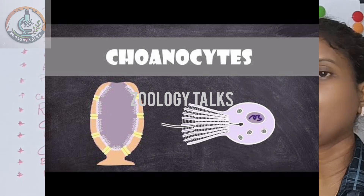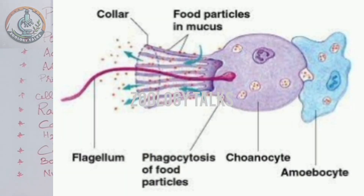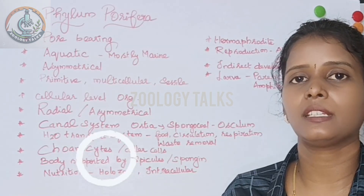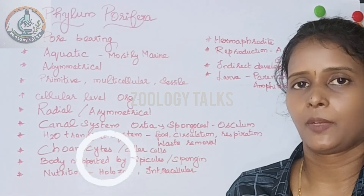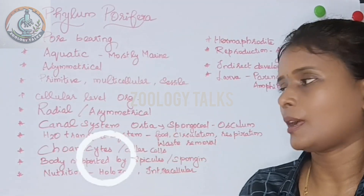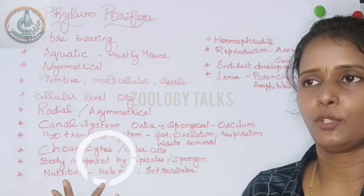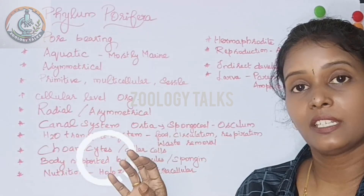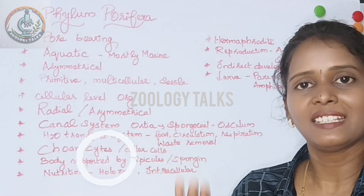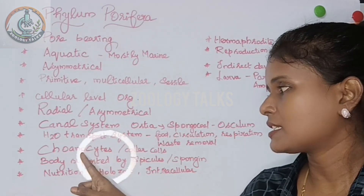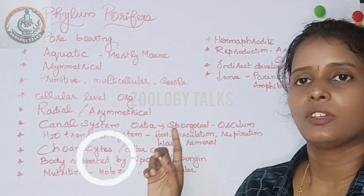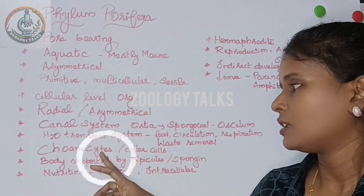Next is choanocytes — a very, very important characteristic feature of Porifera. Choanocytes are collar cells. This is an important feature for match-the-column questions and one-word answer questions. The choanocytes are the characteristic feature of Phylum Porifera. These collar cells are responsible for food capture.